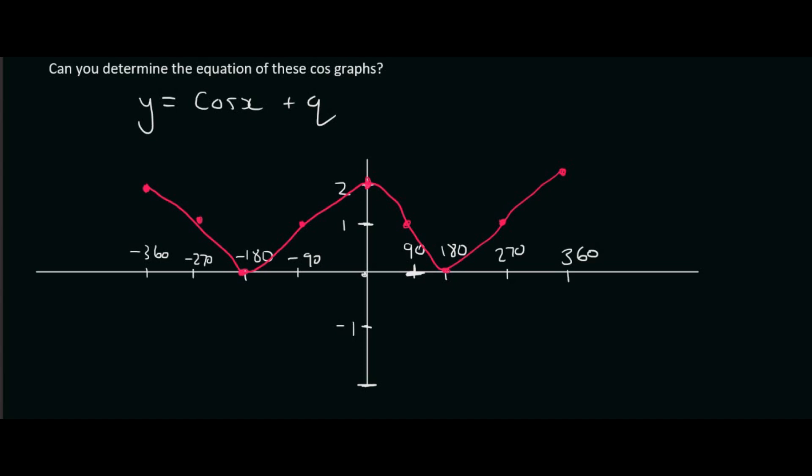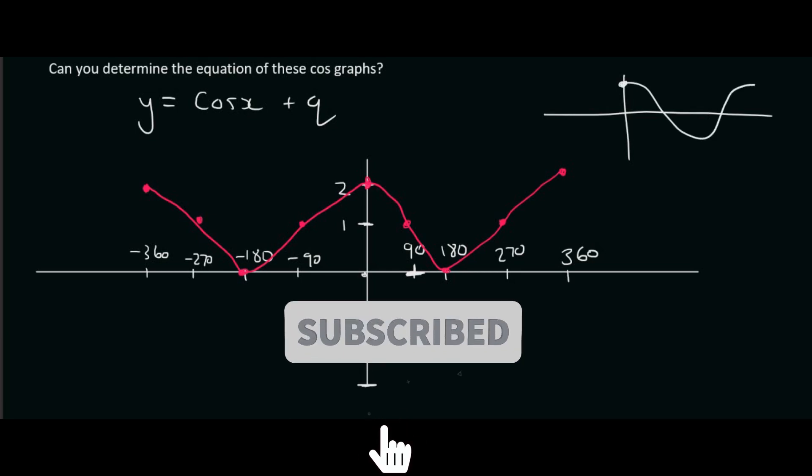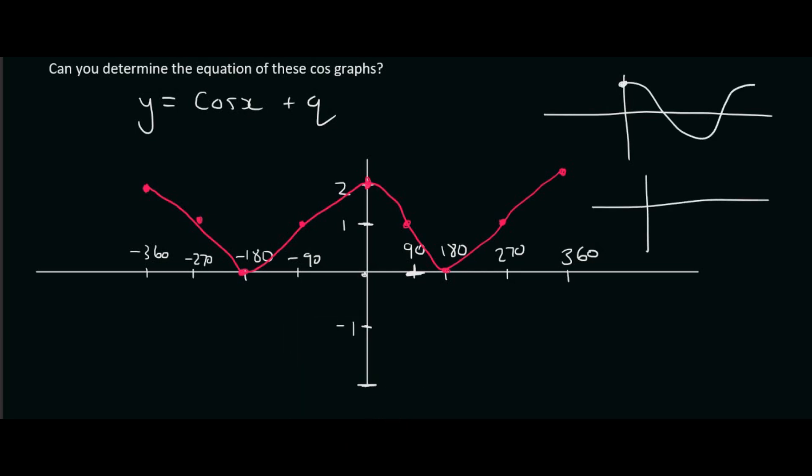In this lesson we're going to practice determining the equation of a cos graph. A normal cos graph, and this should become something you know backwards eventually, starts at 1 and then goes down and up, whereas a sin graph starts at 0 and then goes like that.